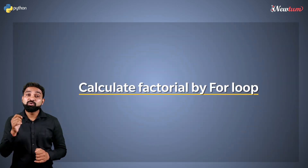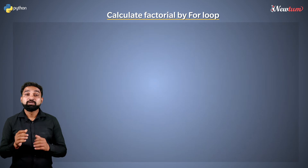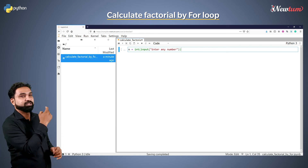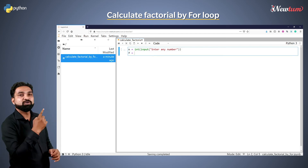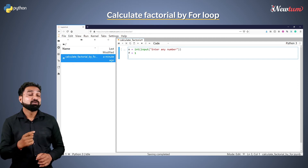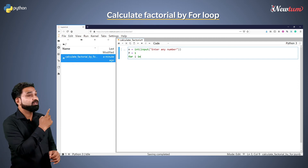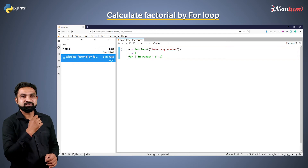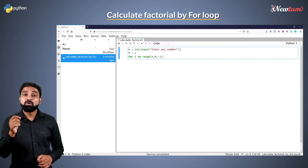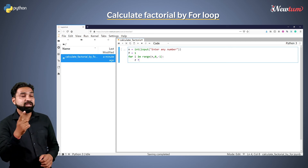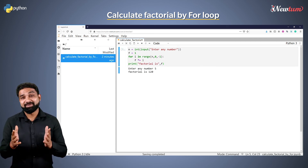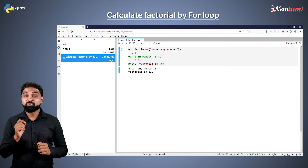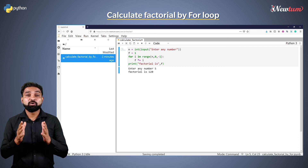Now we will study how to write the factorial program using a for loop. Just like the previous program, we will accept the input n and convert it into an integer. We will declare the variable f equal to 1. Then write: for i in range with int bracket n, comma 0, comma minus 1. In the indent of the for loop write f star equal to i. It is the same program as the last one but written for the for loop, so now you know you can write a factorial program using either a for loop or a while loop.